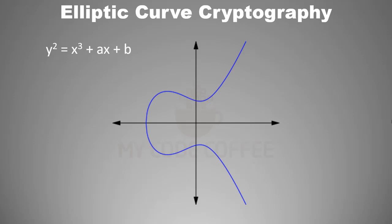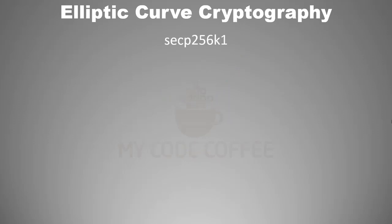Bitcoin uses a specific elliptical curve and set of mathematical constants as defined by a standard called SECP256k1. When SECP256k1 constants are applied to the elliptical curve it produces an elliptical curve with the equation: y squared modulo p equals to x cubed plus 7 modulo p, where p is a very large prime number. So this is the Bitcoin elliptical equation.